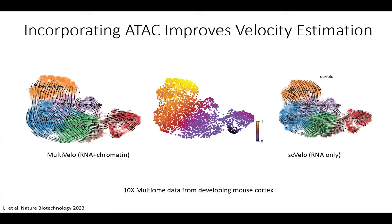We tested this on 10x Multiome data from developing mouse cortex. We ran our model and compared the velocity vectors predicted by our approach with those predicted by the RNA-only model. Known biology tells us that radial glia produce intermediate progenitors, which make the cortical layers, and radial glia can also divide to make glial progenitors. Looking qualitatively at the velocity vectors, ours matches much more with what's expected in this system — incorporating chromatin gives you a real benefit in predicting future states of cells.